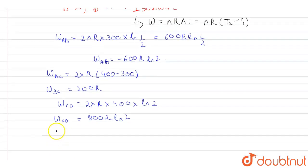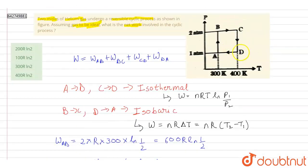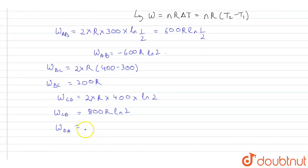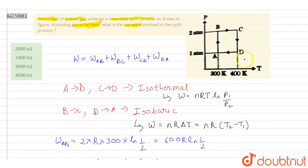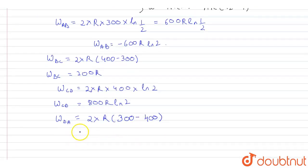Work done from D to A: this is an isobaric process. W_DA = nR(T2 − T1) = 2 × R × (300 − 400) = −200R.